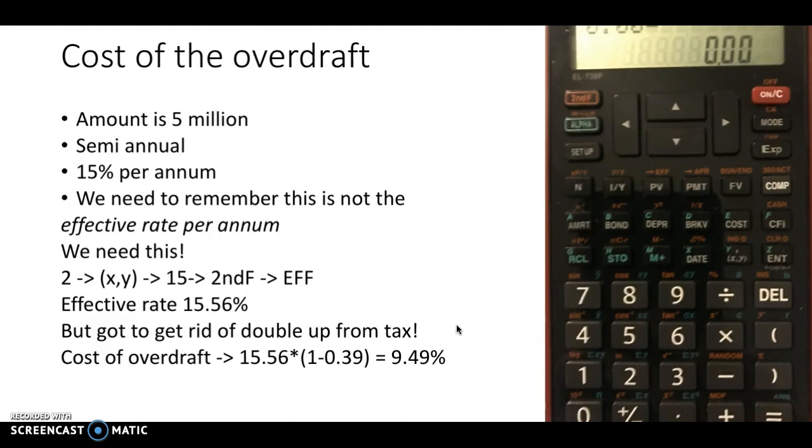We need to work out what the cost of the overdraft is. The amount is 5 million. It's a semi-annual payment, but it's quoted as 15% per annum. We need to remember what the effective rate per annum is, so we need to get that out. So again, if we clear our memory, second alpha, zero, zero. This is such a good mock-up of the calculator.